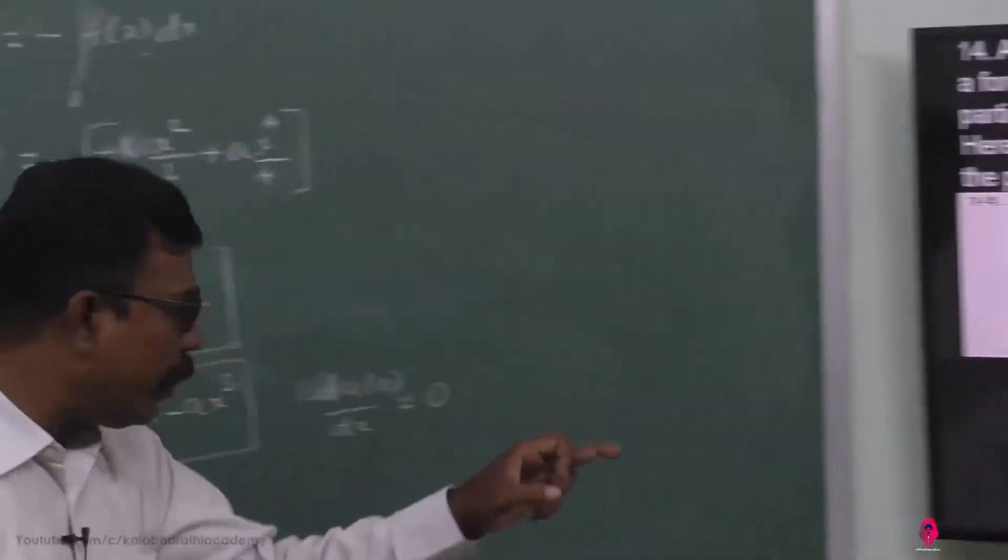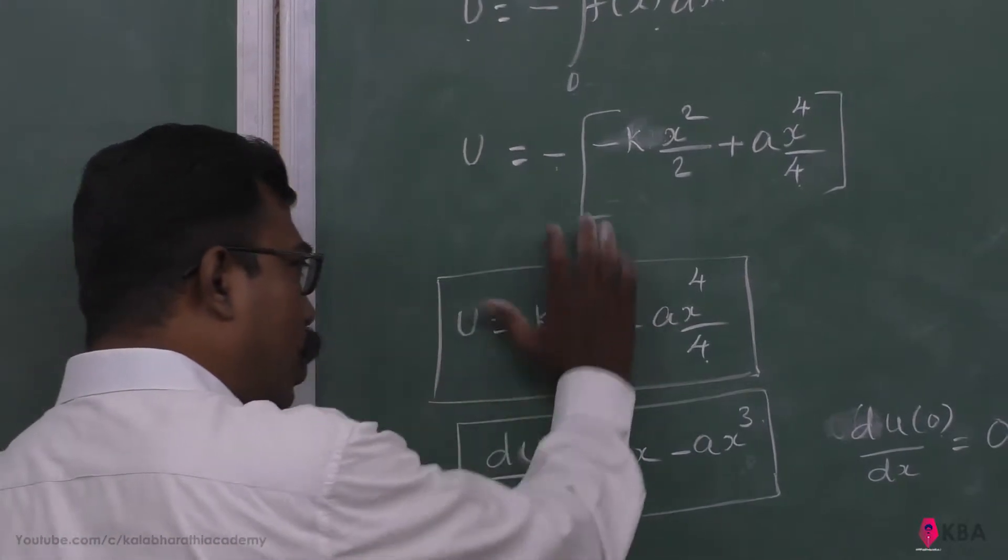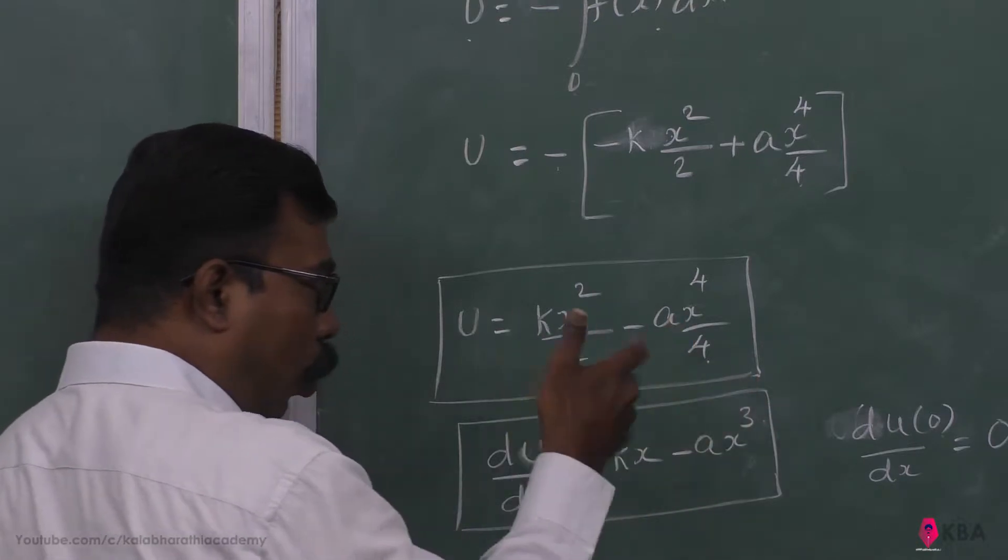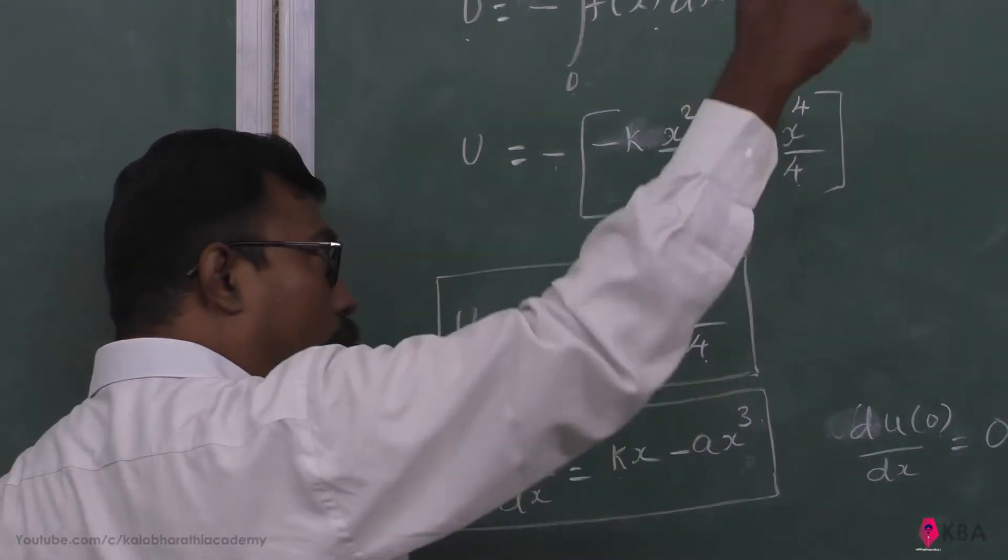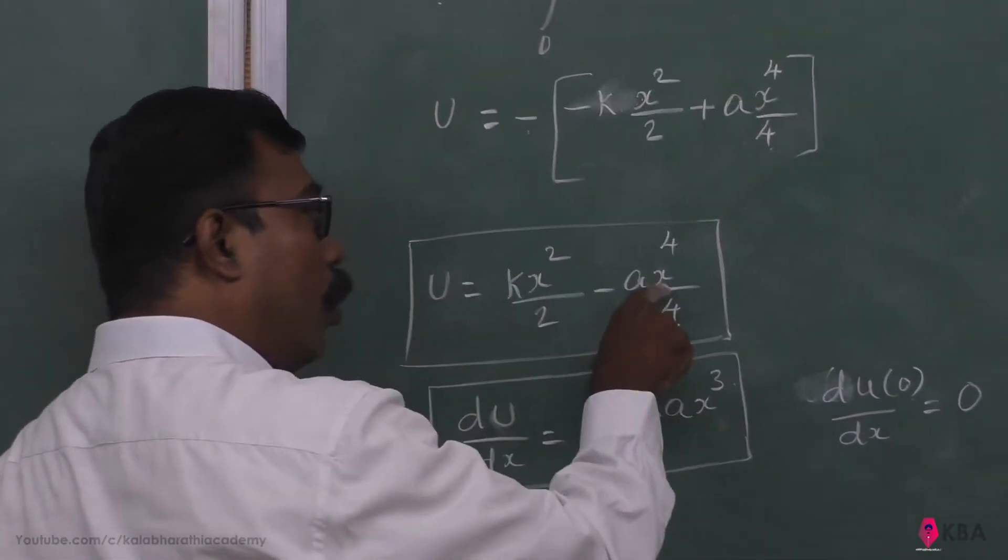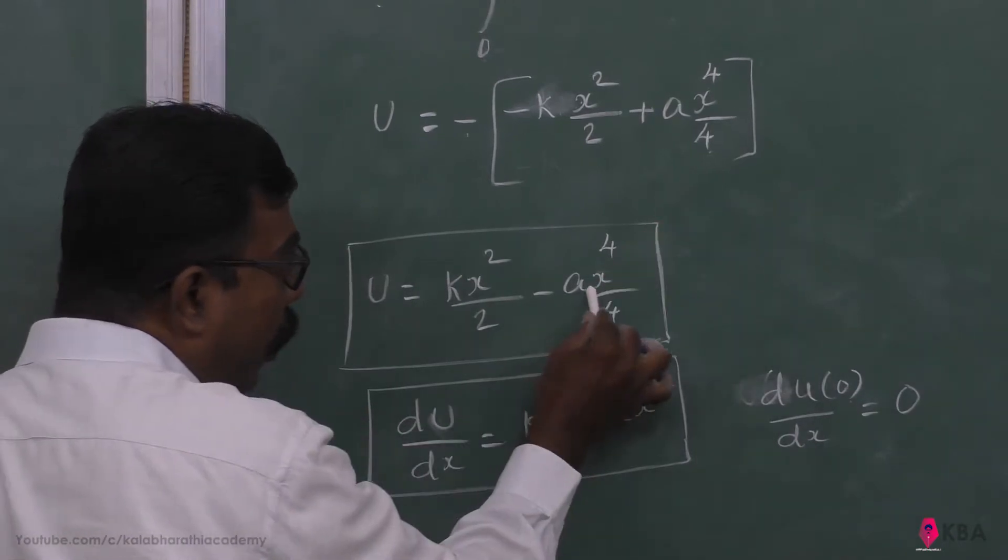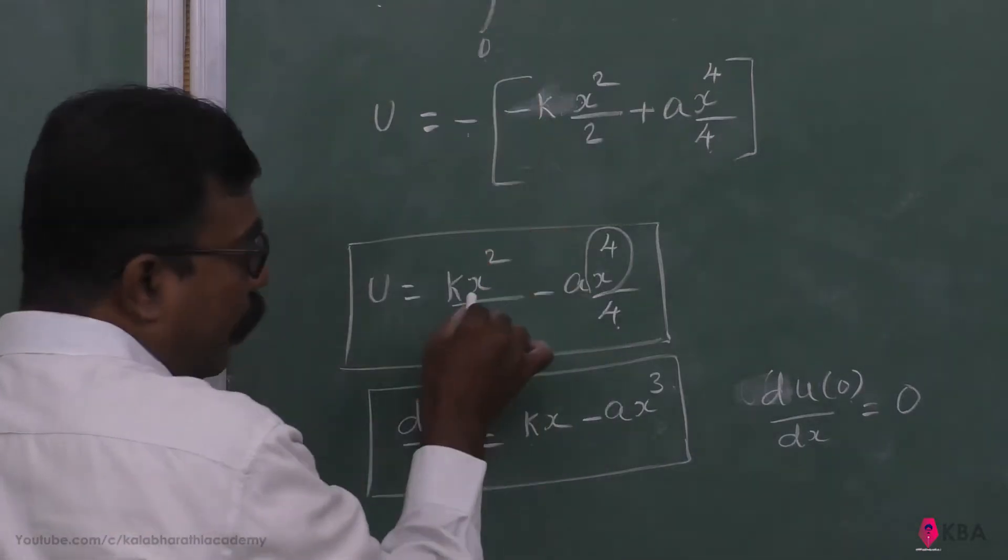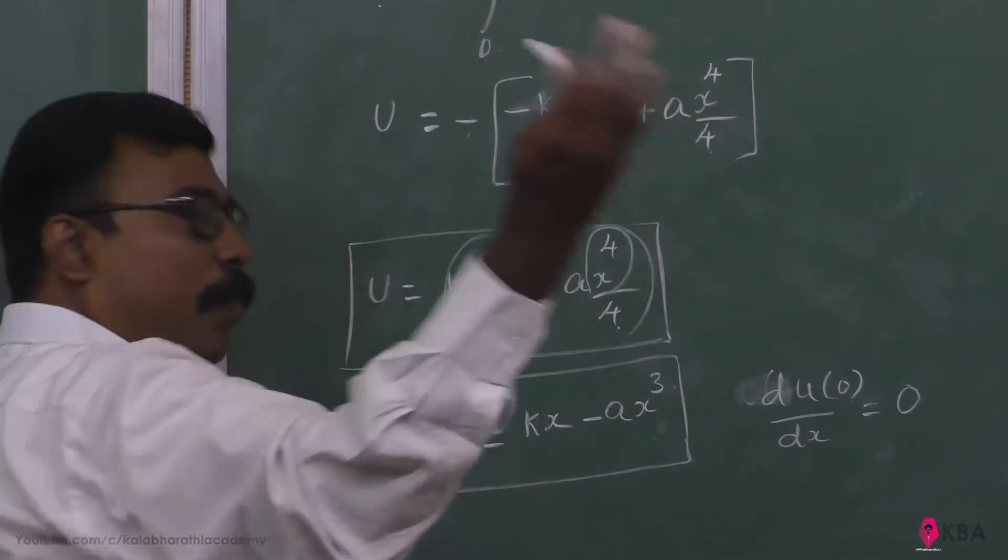Whether it increases or reduces will depend on x power 4 by 4 term. When x goes to higher values, this is x power 4 - 2 power 4, 3 power 4, 5 power 4. So for larger x, this x power 4 term will be overpowering.